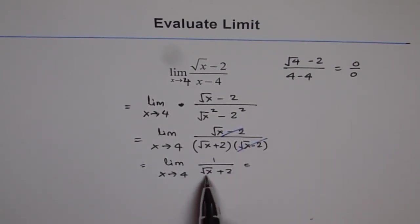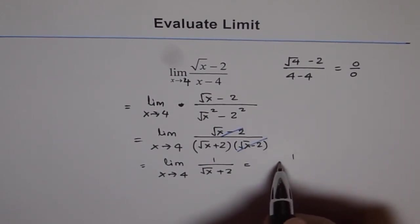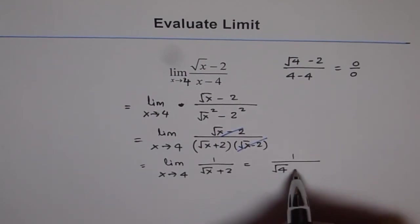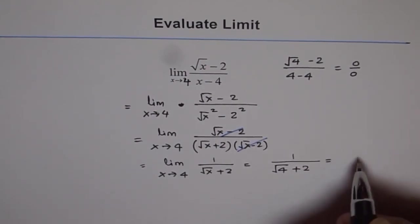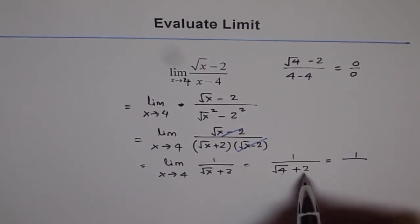Now we can substitute x as 4 and get the result. So we have it like 1 over square root of 4 plus 2, which is 1 over 2 plus 2, which is 4. So that's our answer.